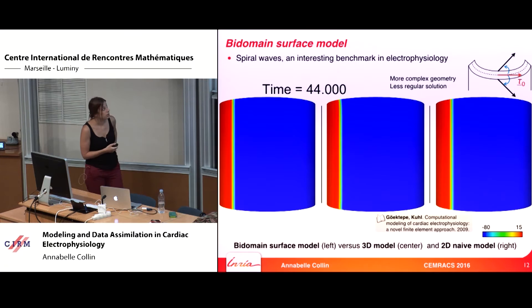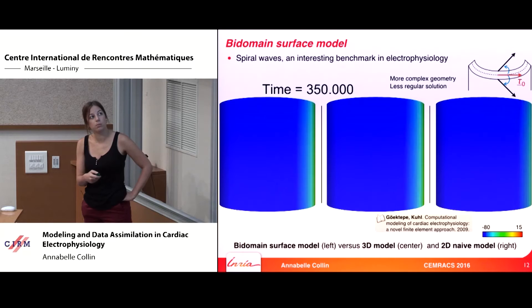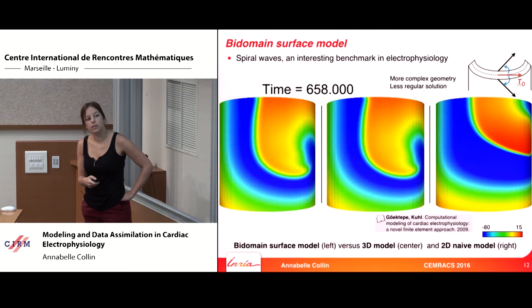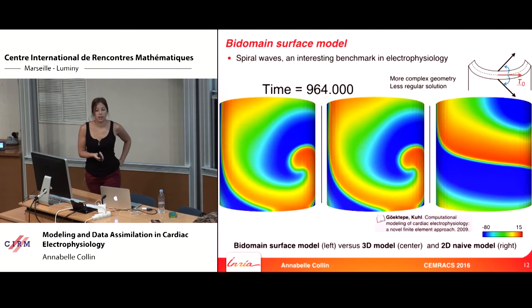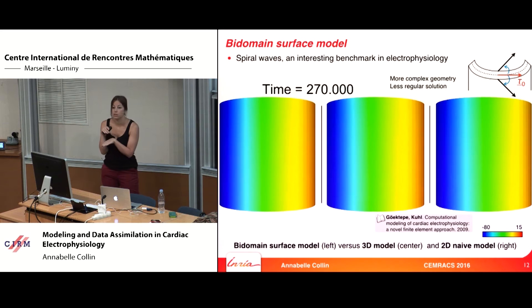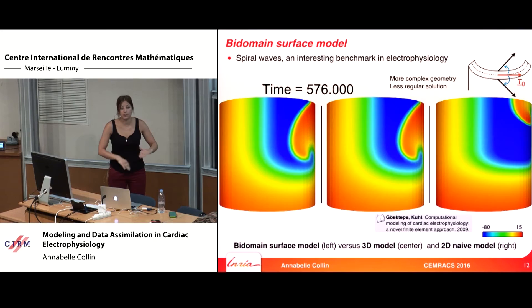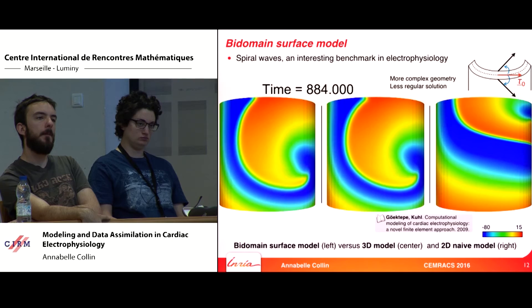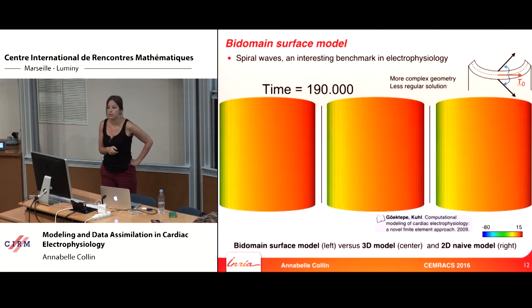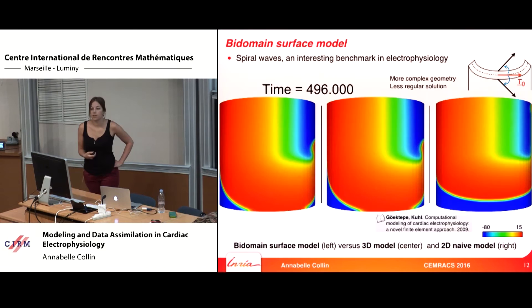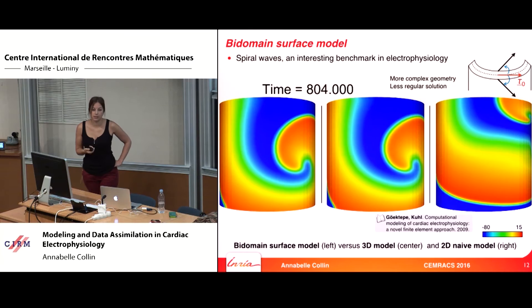I will show a video with the bidomain surface model on the left, the 3D model in the middle, and the 2D naive model on the right. The naive model is what you obtain if, without asymptotic analysis, you simply take the mid-surface fiber direction and apply it across the thickness. This naive model is not able to follow the 3D bidomain model, confirming that we need the asymptotic analysis to correctly integrate fiber variation across the thickness.